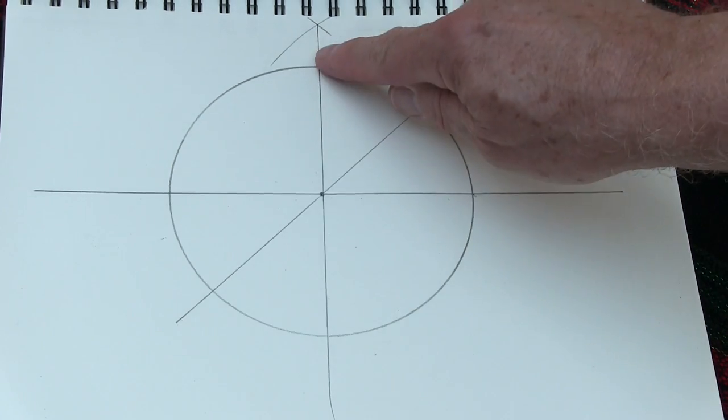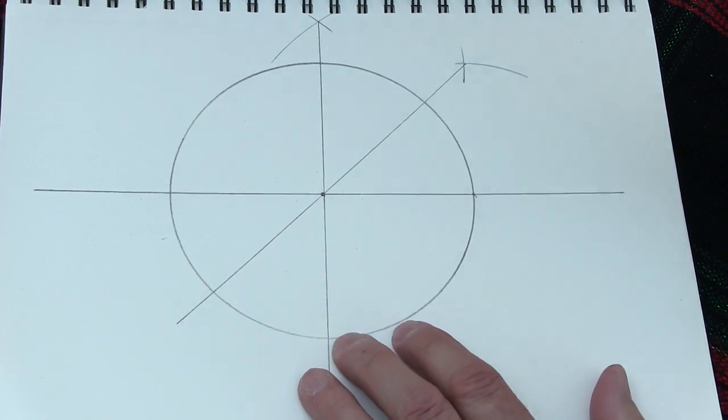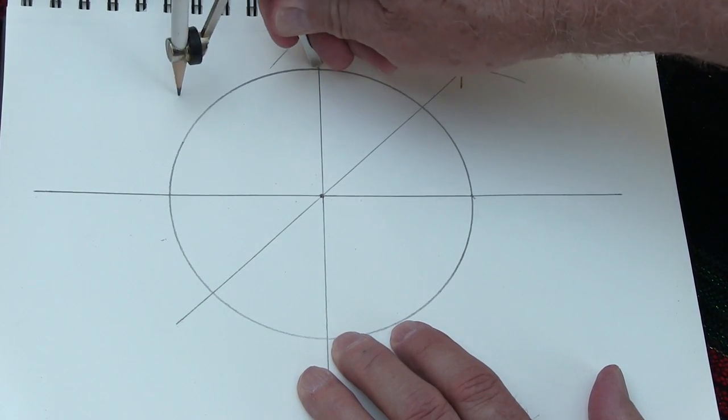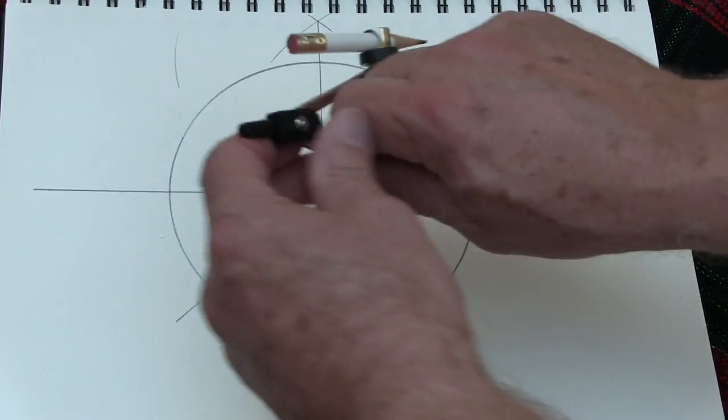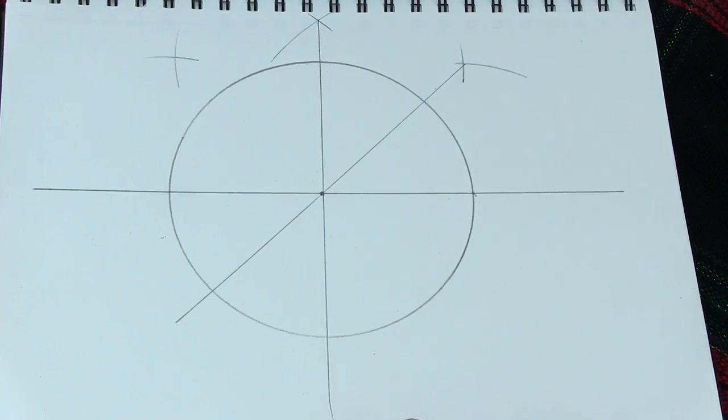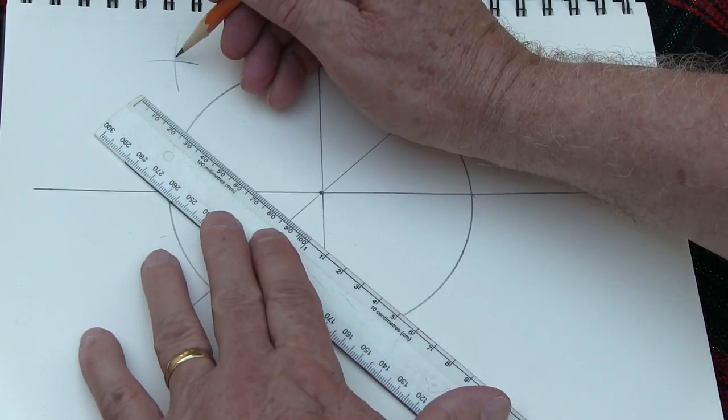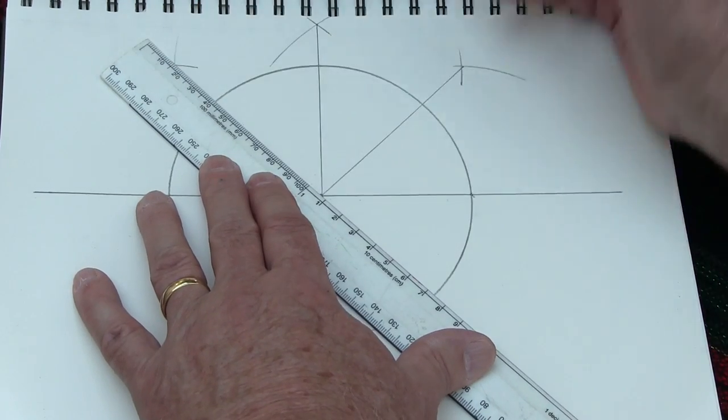Simply repeat the process from here and here with intersecting arcs out to the left. Line things up and construct the line segment.